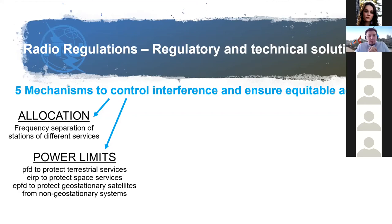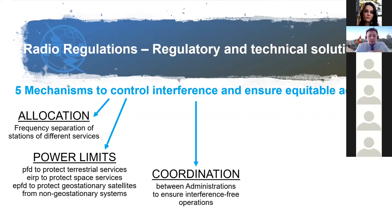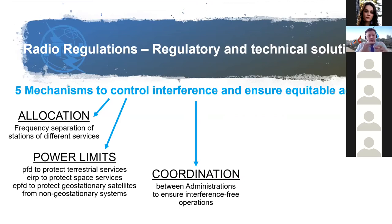However, power limits may not be sufficient, so there is a third mechanism: coordination. For all systems that respect the allocation and comply with power limits, they can still create interference if not properly coordinated. Member states that operate these systems discuss together and make detailed technical computations and operational considerations so they know two systems are compatible. This series of bilateral coordination ensures all systems can operate together without creating radio interference.